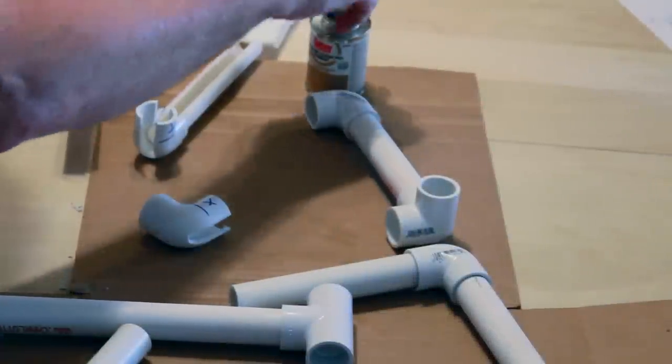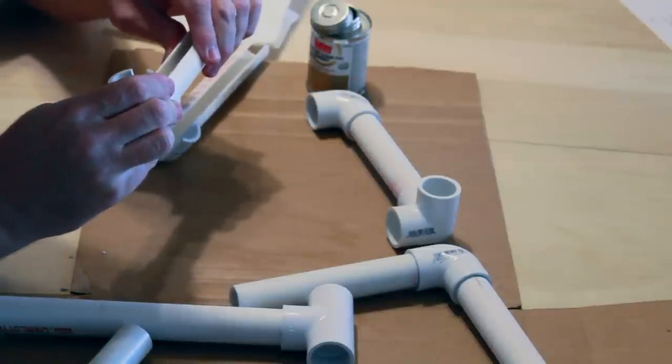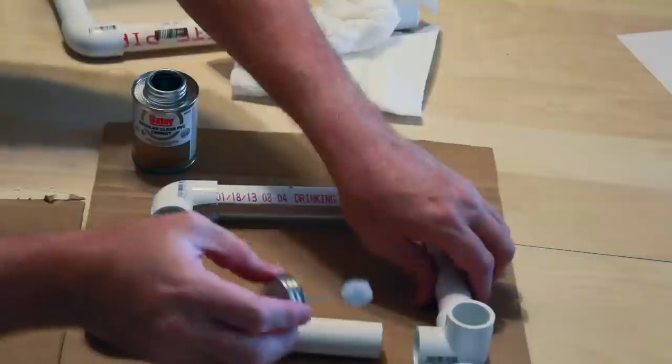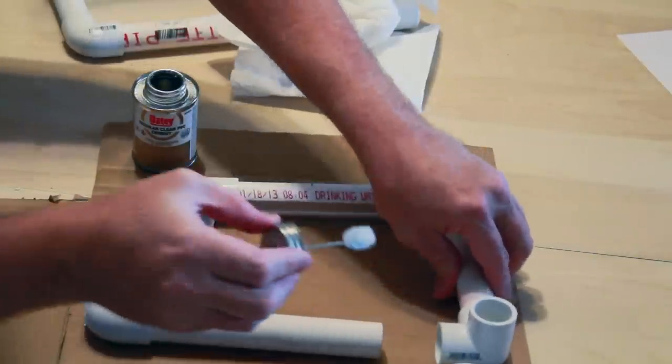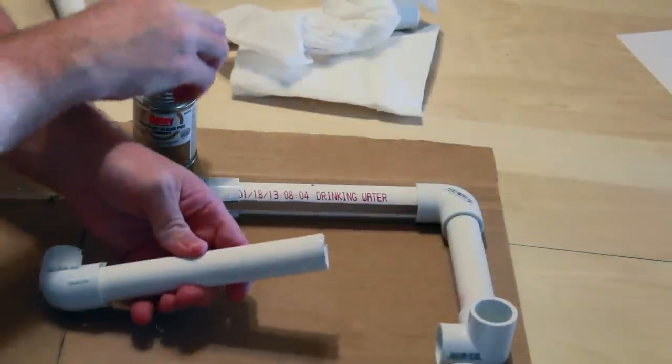Now comes the part where it all comes together. First off, we take those elbows that we cut and the straight pieces that we cut, and we make sure we glue them together perfectly straight. If they don't quite match in size, you might want to go back and sand them off a little bit so that they fit.